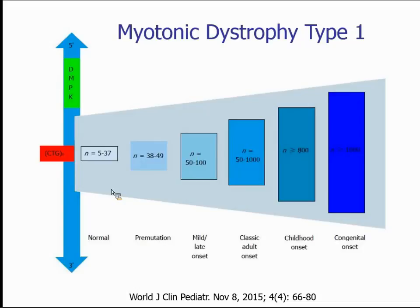Myotonic dystrophy type two does not exhibit anticipation. I've seen patients with as many as 15,000 repeats have minimal symptoms, and I've seen similar patients with much more substantial proximal weakness — so there's no anticipation in type two. Also, I neglected to mention — both type one and type two are autosomal dominant.